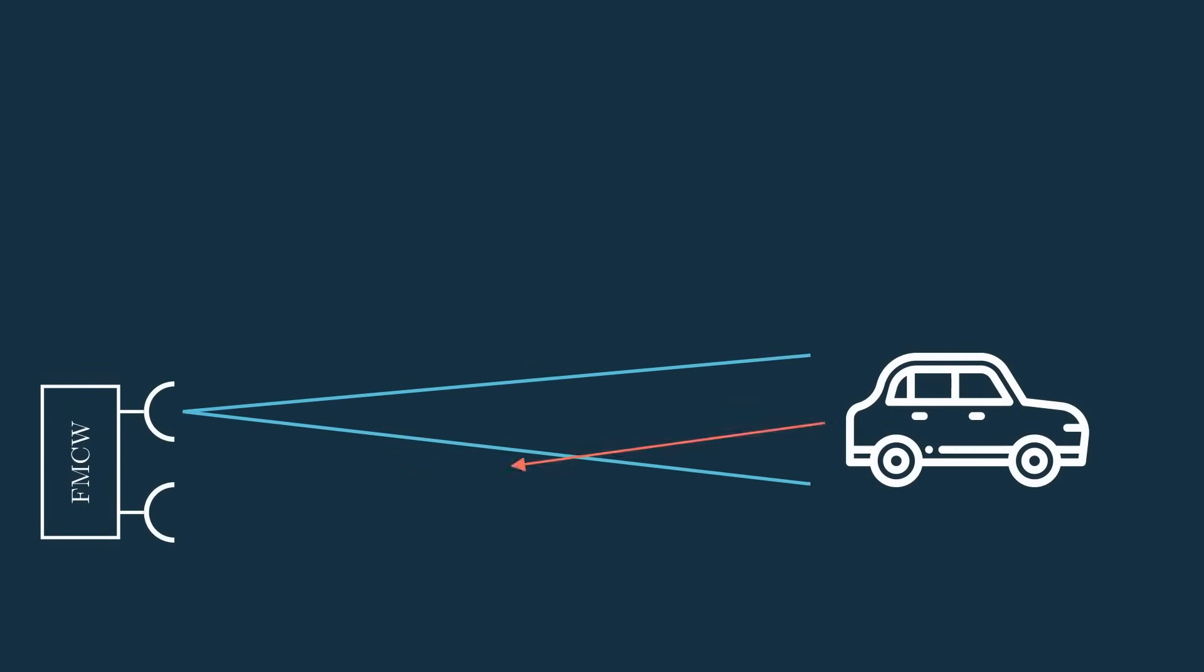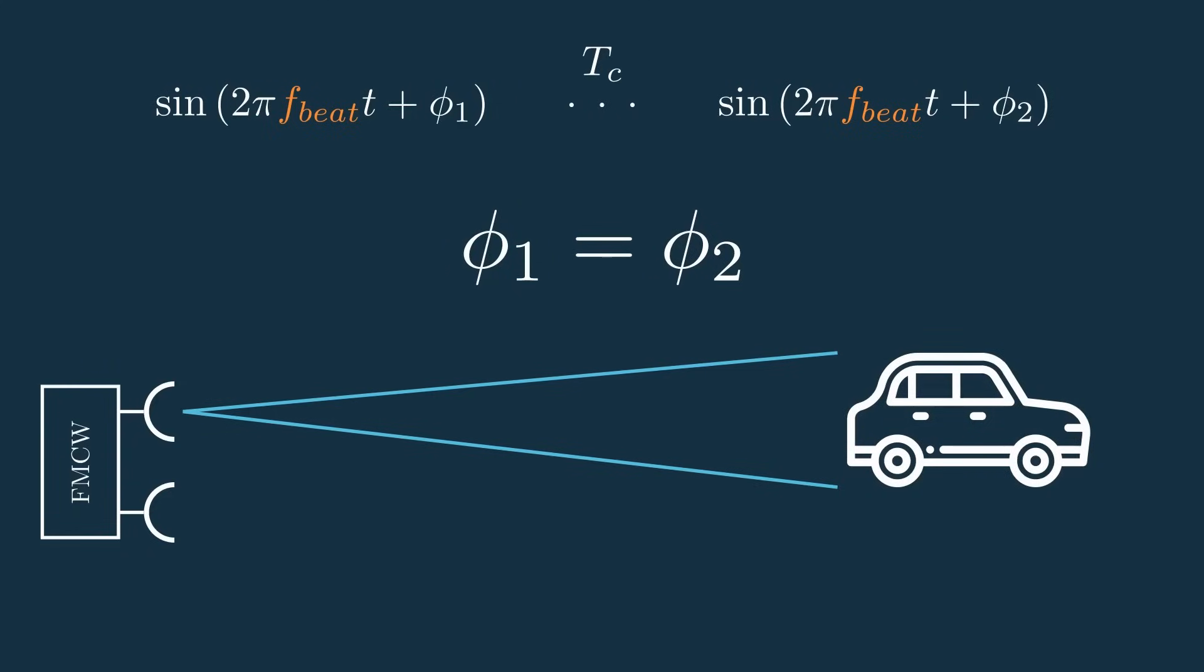Well, if our target is stationary and we take a measurement, then wait for the FMCW ramp time to finish and take another measurement, we'll get back two equivalent signals and that phase delta will be zero. But it gets more interesting if the target is moving.